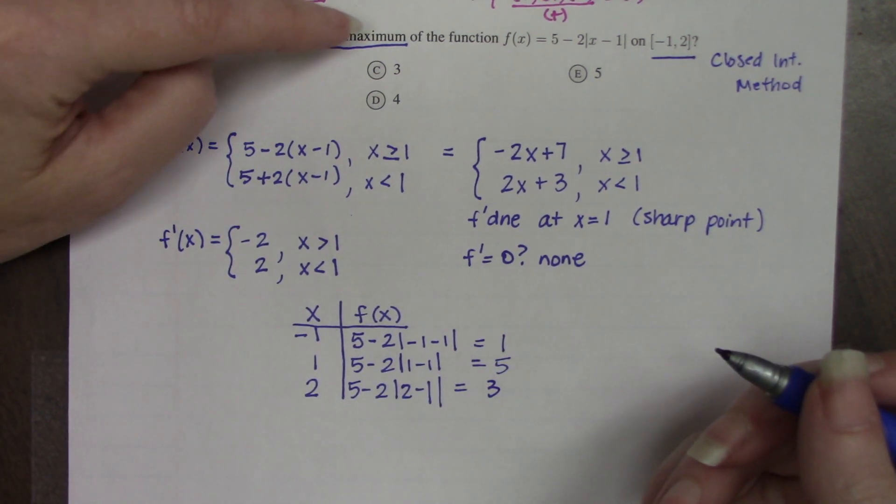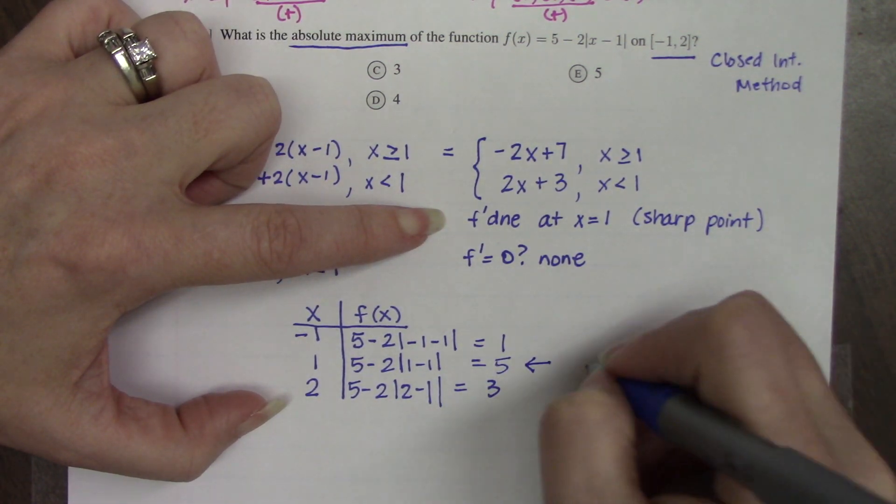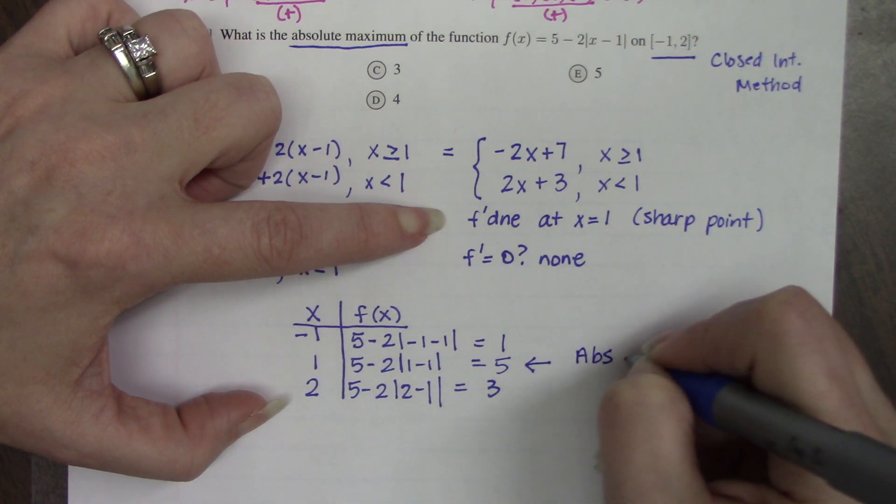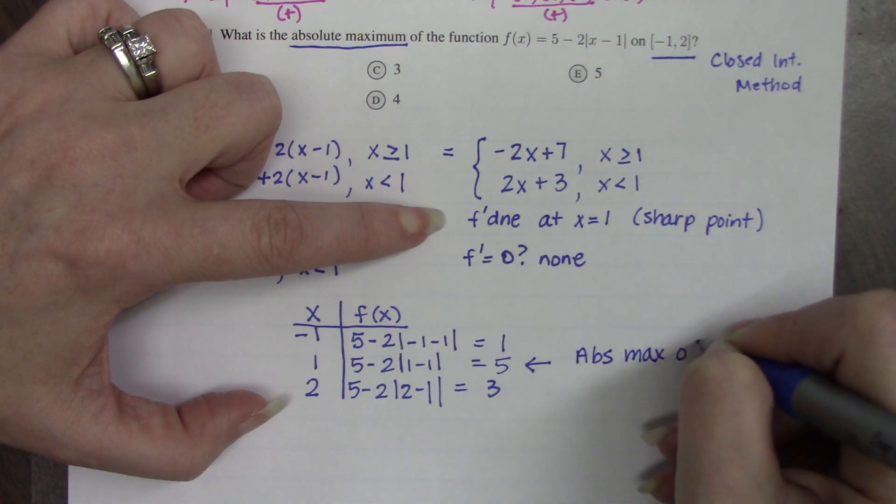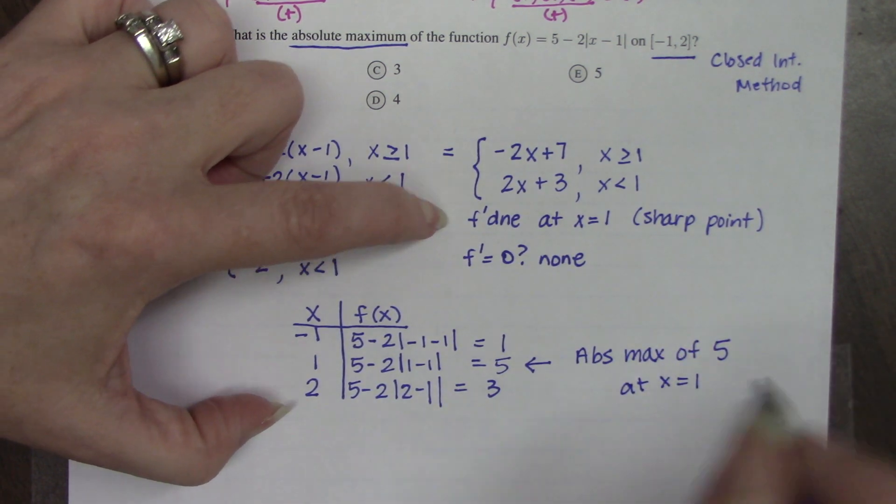So remember the question was asking for absolute maximum. So we're looking for the biggest y values. So there is an absolute max of 5 at x = 1.